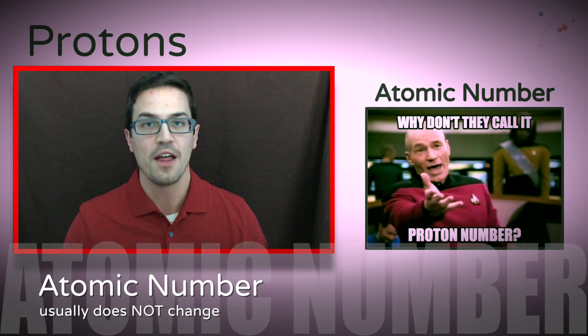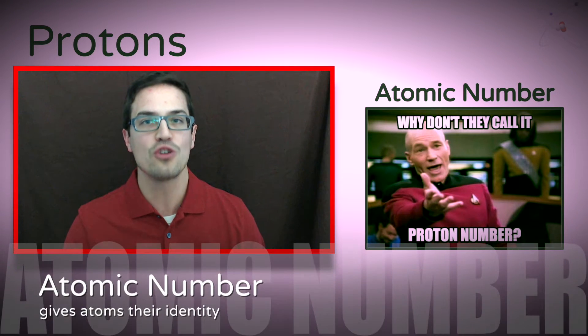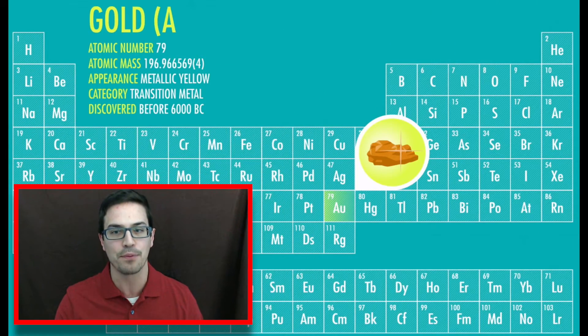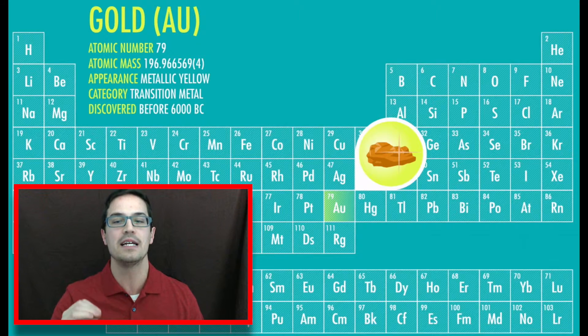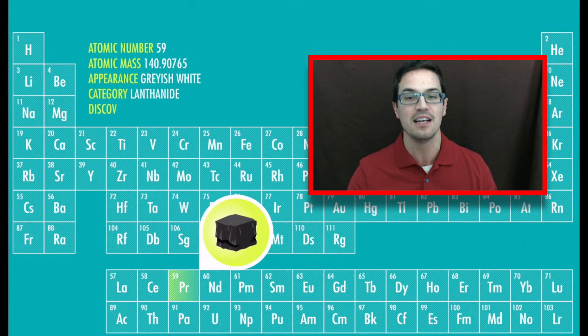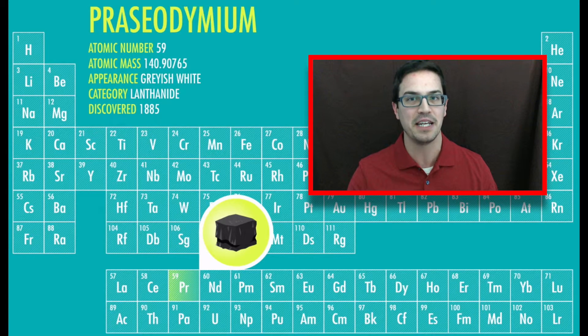The number of protons, or the atomic number, is the soul of the atom. It basically gives the atom its identity. For example, if an atom has 79 protons in it, then it will always be gold, no matter what. If an atom has 59 protons, then it is always praseodymium.